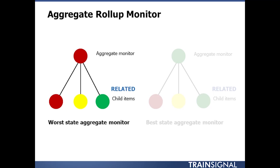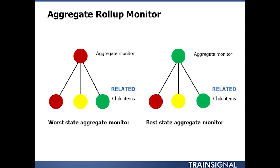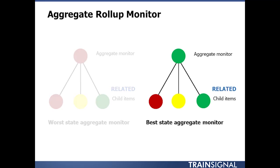One of the child items is red, therefore the aggregate monitor is also red. Conversely, you've got a best state health monitor — this is the opposite. This is going to tell you what the state of the group is with the best health.